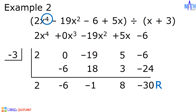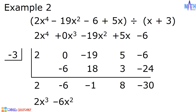Since the degree of the dividend is 4 and the degree of the divisor is 1, the degree of the answer is 3. And the answer is 2x cubed minus 6x squared minus x plus 8 minus 30 over x plus 3.